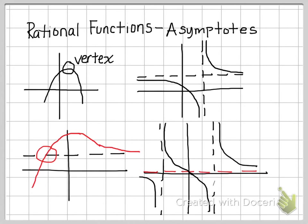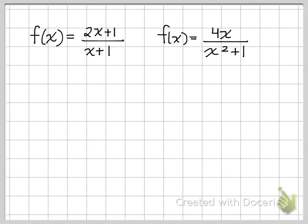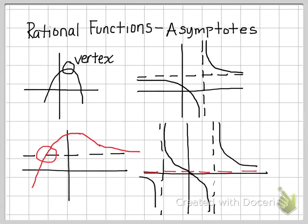So that's what an asymptote is — it's the defining feature of a rational function. Let's look at finding the asymptotes of rational functions. Here are a couple of rational functions. What makes them rational is that they have a variable in the denominator. For example, four over x squared plus one is a rational function because of the variable in the denominator. We're going to look at both vertical and horizontal asymptotes.